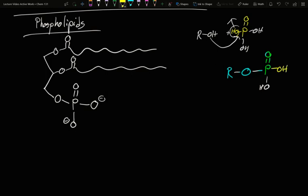This other side, there's no reason another alcohol can't come in. Attack here and push that one off. And in fact, that's what happens. That O goes to an R group.